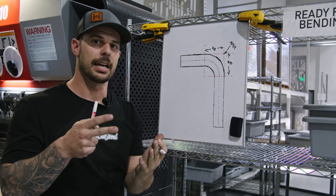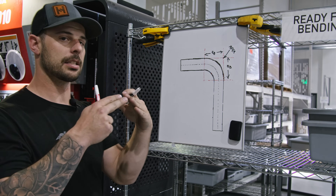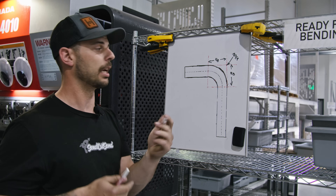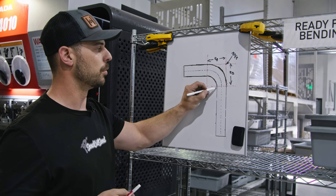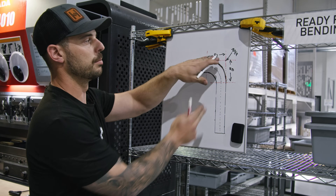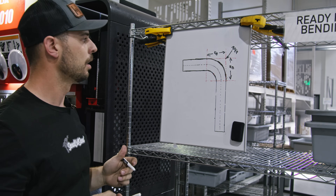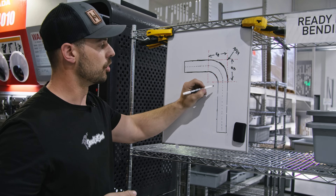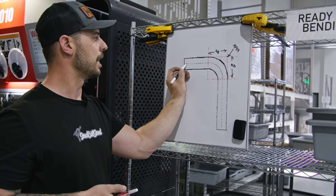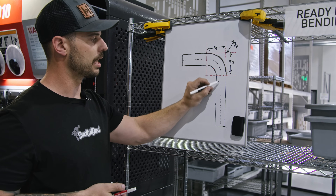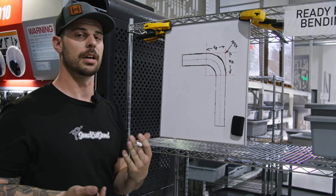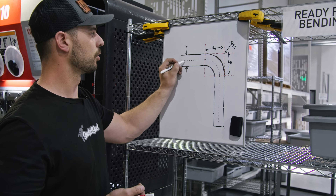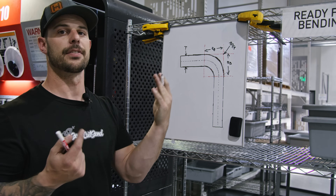There are two things that really affect the setback: the angle at which you're bending the material, and the radius at which you're bending it. If we change the radius, we move the bend line down, and if we change the angle, we move our apex. The next thing we're going to talk about is our neutral line, which runs through the whole center of the part — at half of the thickness T.